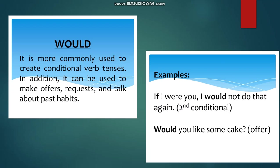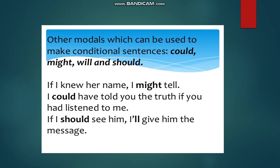The next modal is 'would.' It is more commonly used to create conditional verb tenses. It can also be used to make offers, requests, and talk about past habits. For example: 'If I were you, I would not do that again' — second conditional. 'Would you like some cake?' — offer. Other modals used in conditional sentences include could, might, will, and should: 'If I knew her name, I might tell.' 'I could have told you the truth if you had listened to me.'